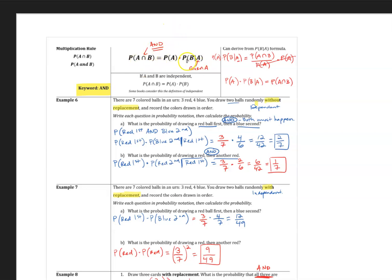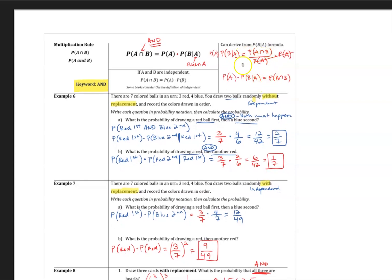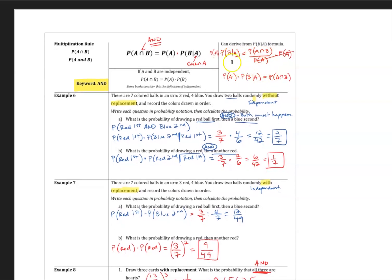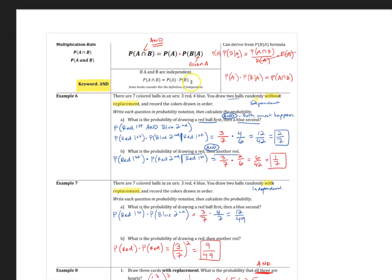You can see the formula for it. What's the probability of A and B happening is the probability of A times the probability of B given that A already happened. And this formula comes from the one that we've seen in the previous video here. It's a little algebra, but it's the same exact formula, just solved algebraically for the AND part or the intersection.